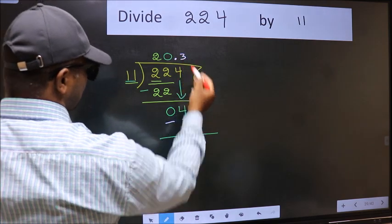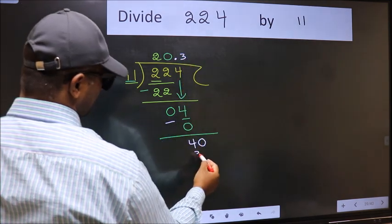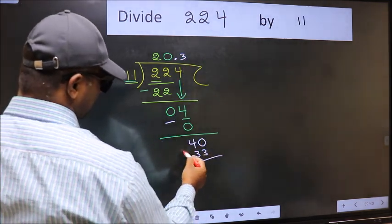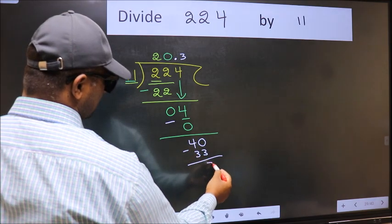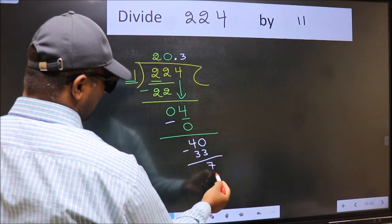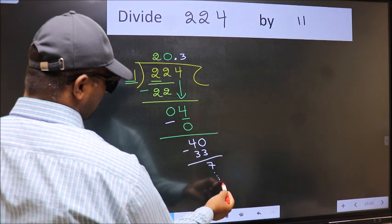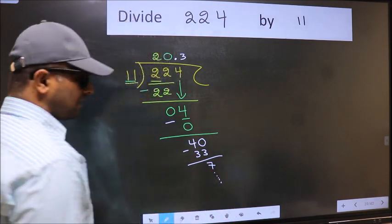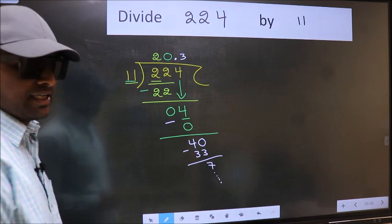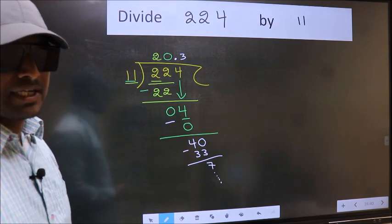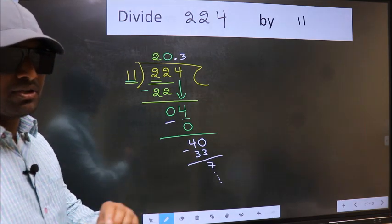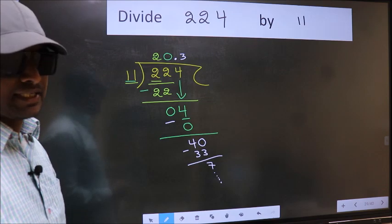So now we have 40. A number close to 40 in the 11 times table is 11 times 3, which is 33. Subtract and you get 7, then continue the division. Did you understand where the mistake happens? You should not bring the number down and place the decimal in the same step.